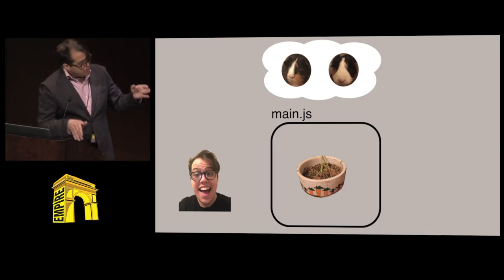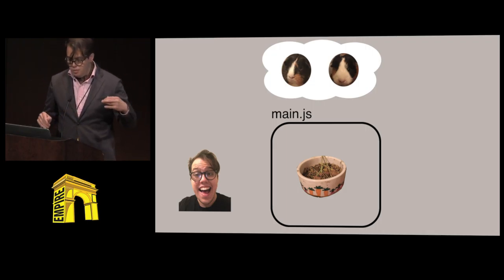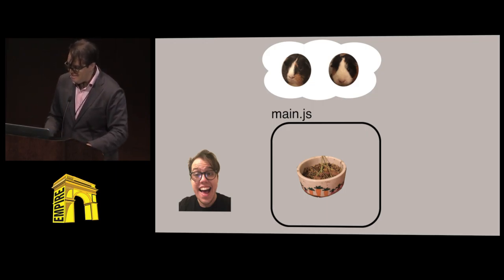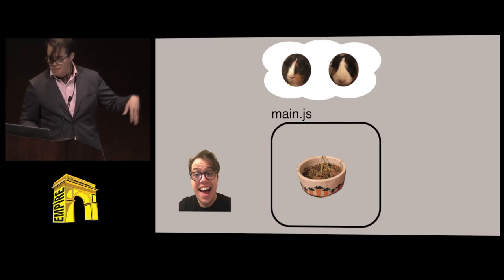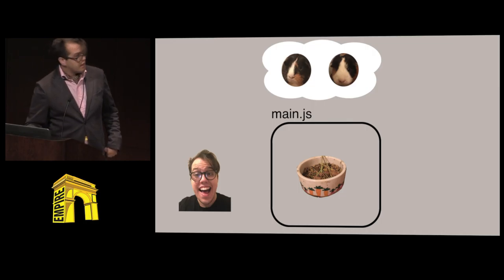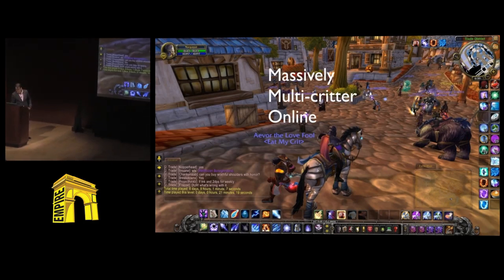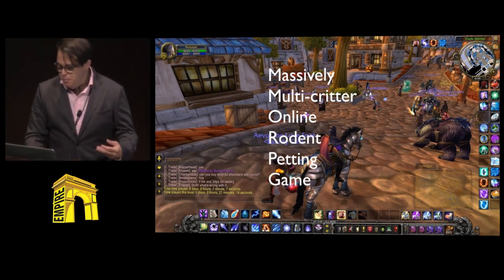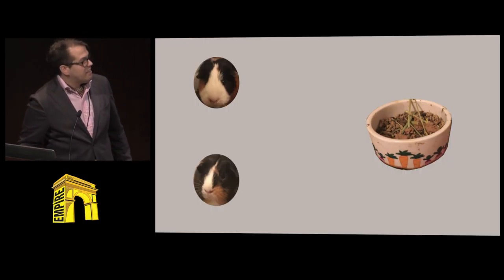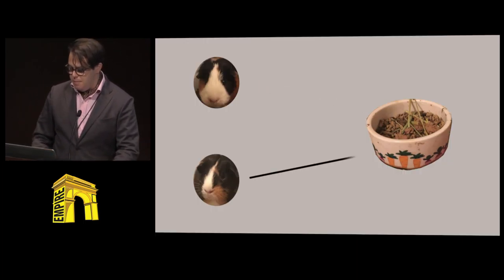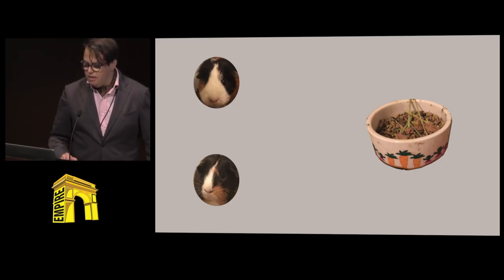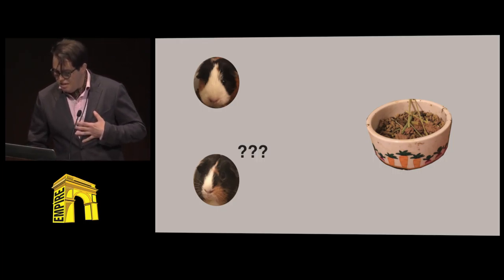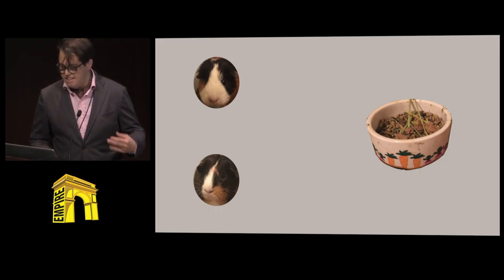If the design changes — if we want a more multiplayer environment — we could have all the critters run server-side and send messages over a socket. We could even make this a massively multi-critter online rodent petting game. Another pain point with microservices is that adding networks makes things unreliable — not unreliable like I'm unreliable about cleaning my critter's cage on a timely schedule, but just unreliable enough that you need to handle failed connections and timeouts.